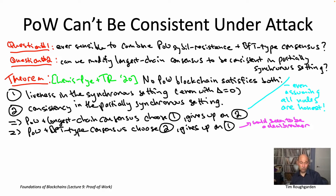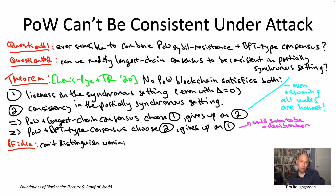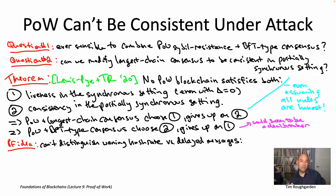Let's talk about why this theorem is true. You might be surprised it holds even with no Byzantine hash rate at all. We are going to use the fact that the amount of hash rate in the system may vary over time. The one-sentence summary of why this theorem is true: in a proof-of-work blockchain, you cannot distinguish between waning hash power and delayed messages. Both of these obstacles are present even if all hash rate is honest — hash rate may go up and down, and messages may get delayed, regardless of whether any nodes are Byzantine.